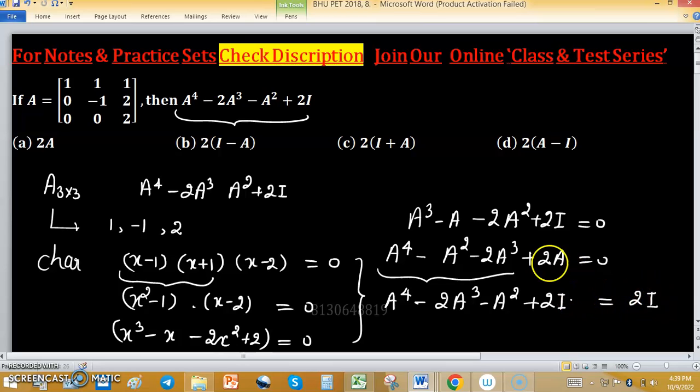2 times identity and 2A on right hand side. So, we have 2 as a common, so I minus A.